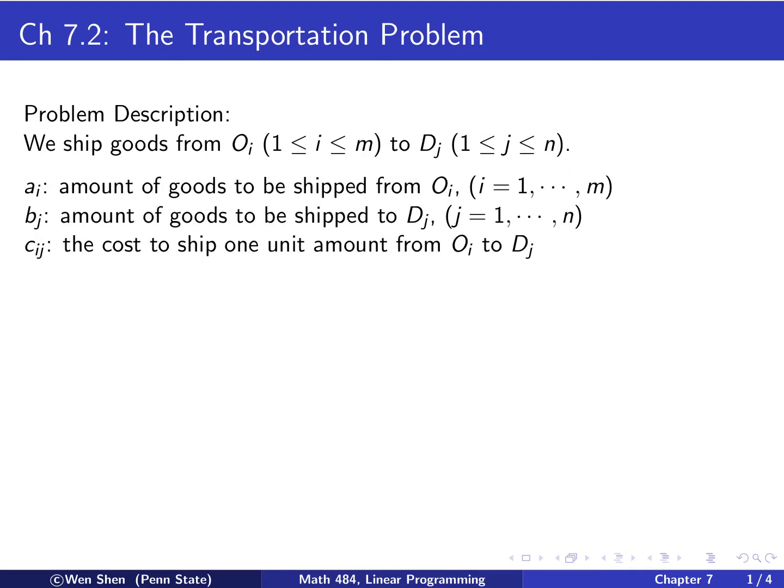Similar to the distribution problem, AI is now the amount of goods to be shipped from the origin OI, and BJ will be the amount of goods to be shipped to the destination DJ.